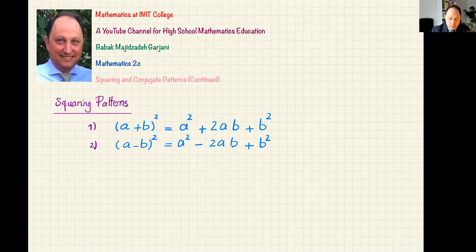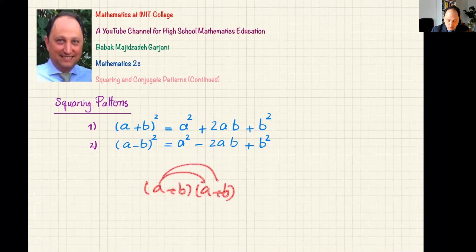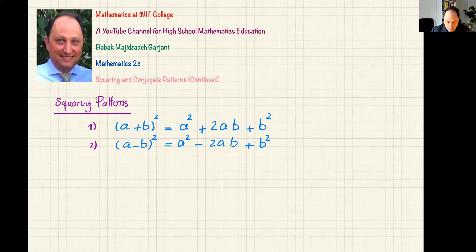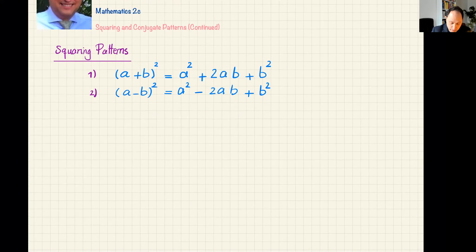Whenever a question says 'use a squaring pattern to expand,' just multiplying them by hand is technically correct, but it's not acceptable because the question is testing whether you know the pattern. Please try to learn these rules and use them so that you become comfortable with them.